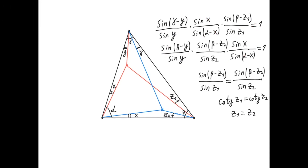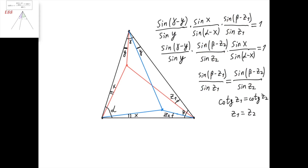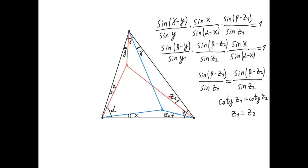Both expressions equal 1, so they are equal to one another. Setting them equal, sine of (gamma minus y), sine of y, sine of x, and sine of (alpha minus x) all cancel out. What remains is: sine of (beta minus z1) over sine of z1 equals sine of (beta minus z2) over sine of z2. This equality leads to cotangent of z1 equals cotangent of z2, which means z1 equals z2 — so this angle equals this angle, and the two lines are isogonal.